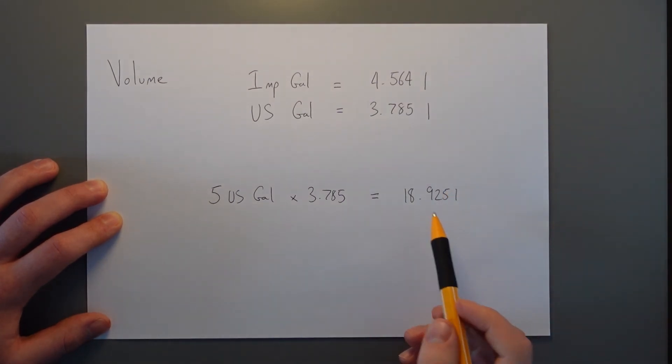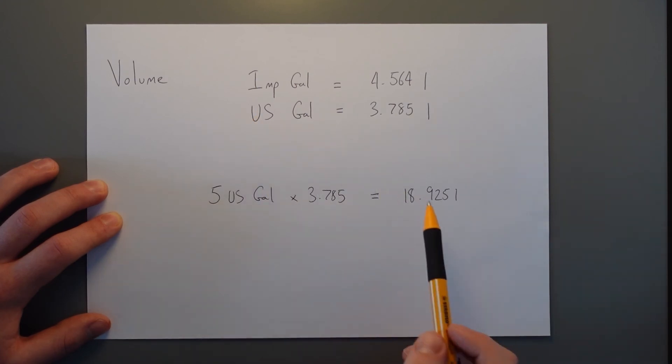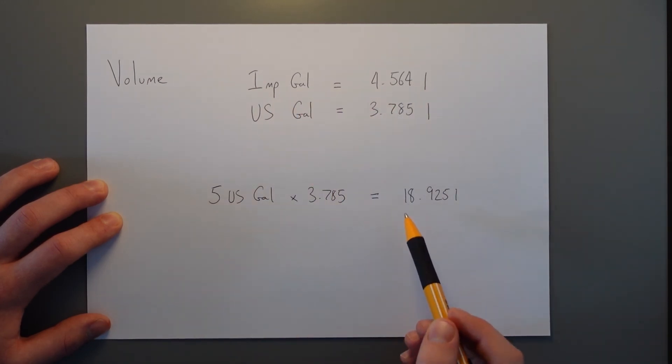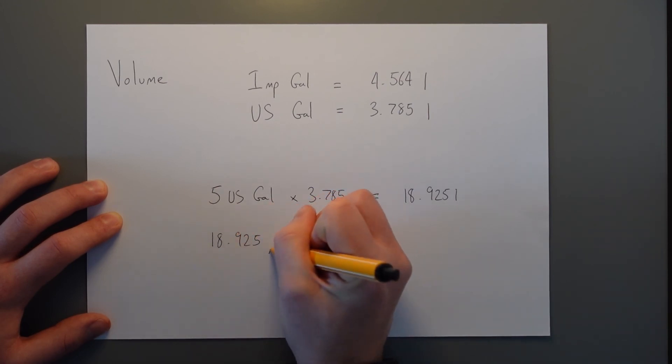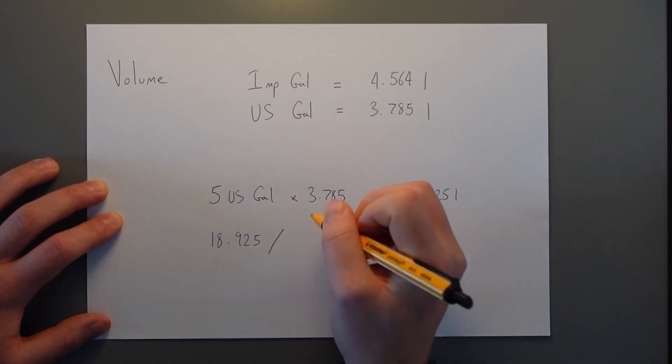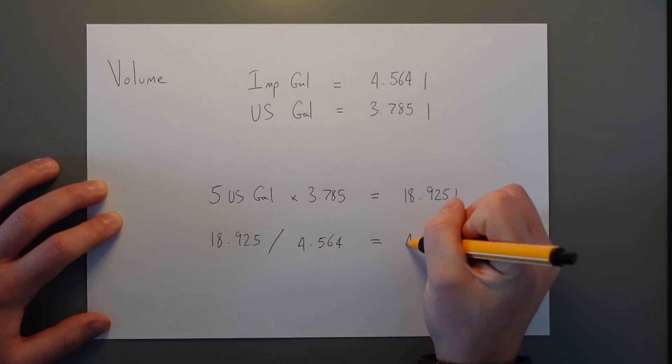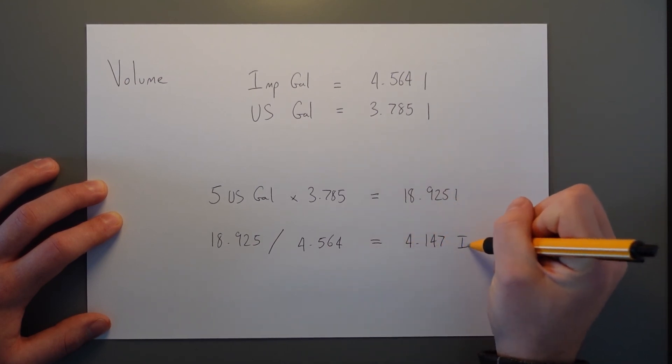That's our midpoint. And then we want to go back to imperial gallons. We know there are going to be fewer imperial gallons as they are bigger than liters. Therefore, we have to divide. So I take that 18.925, divide it by our conversion, which is 4.564. And we come up with an answer, which is 4.147 imperial gallons.